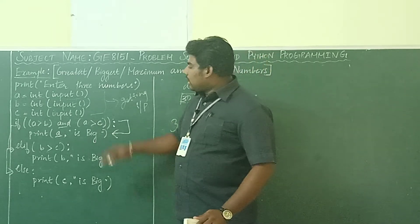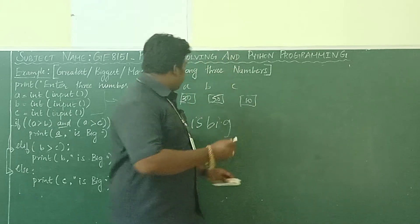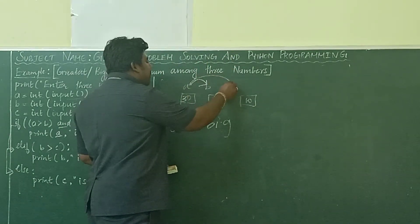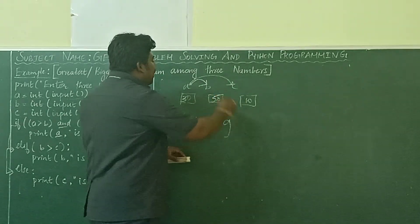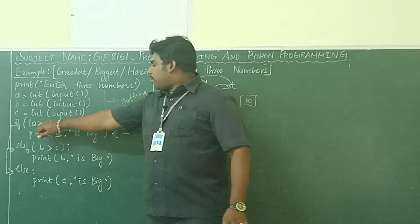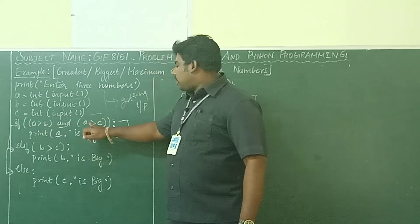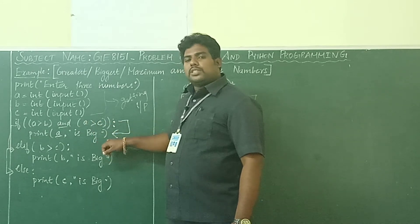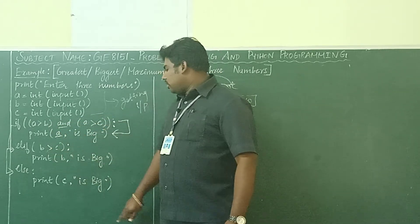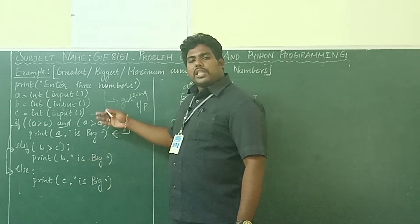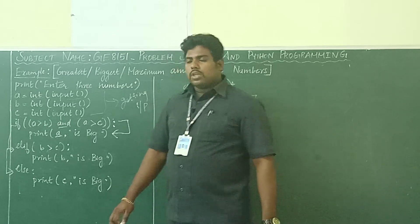So all of you understand? Once again I will explain the logic. First you are getting the three inputs. Then I want to compare the three numbers: first compare A with B, then compare A with C, then compare B with C. So I use: if A greater than B and A greater than C — A is big. If this condition is false, A is smaller than both B and C, so I only check B greater than C — B is big. Else, if both A and B are less, then C is big.